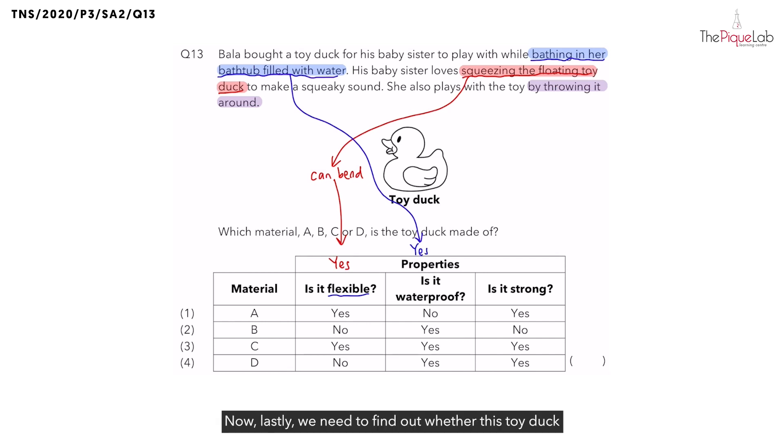Lastly, we need to find out whether this toy duck is going to be strong. Remember from the question above, they already said the sister loves to play with the toy by throwing it around. Imagine if this toy duck was made of glass and she throws the toy duck around. What would happen to the toy duck?